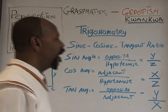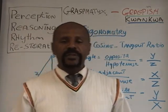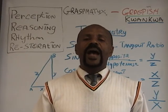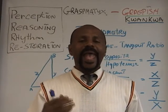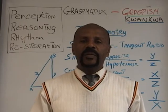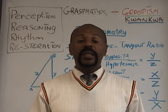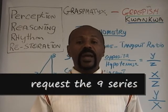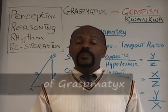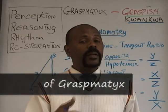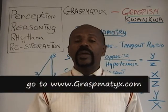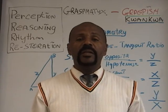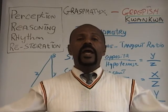Remember, Graspmatics is a nine-series program: parts one, two, three, four, five, six, seven, eight, nine — nine is the highest number there is. All you can do is write to Dr. Yates and request. I recommend that you get parts one, two, and three first. It can propel you to four, five, and six, and that will propel you into seven, eight, and nine. If you get seven and nine without the basics, you'll be so lost. Get the whole nine series.